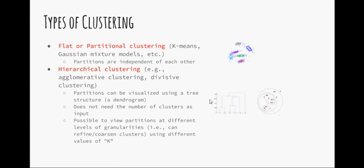There are basically two types of clustering. Flat or partitional clustering algorithms, such as K-means and Gaussian mixture models, where the partitions are independent of each other.